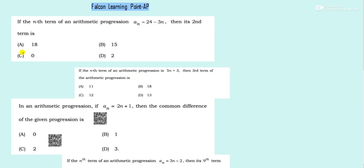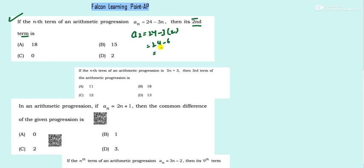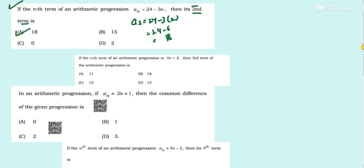Question 1: If the nth term of an AP, a_n, is equal to this, then its second term is dash. Whenever they ask this type of question, just put 2 in place of n. So 3 into 2 is 6, and 24 minus 6 is 18. Option A is the correct answer.